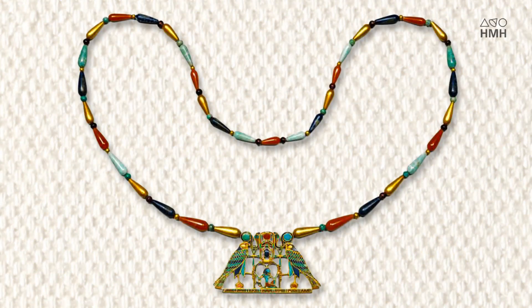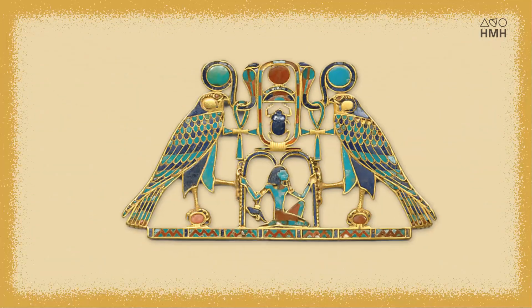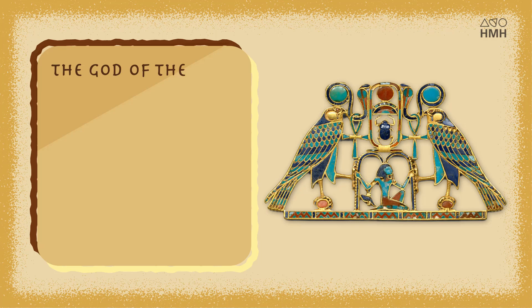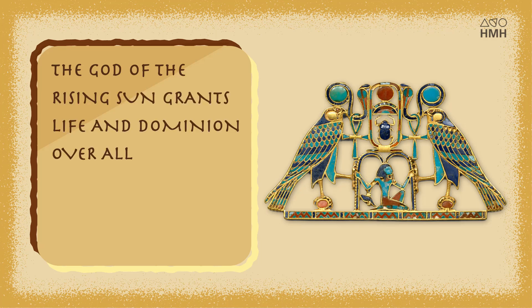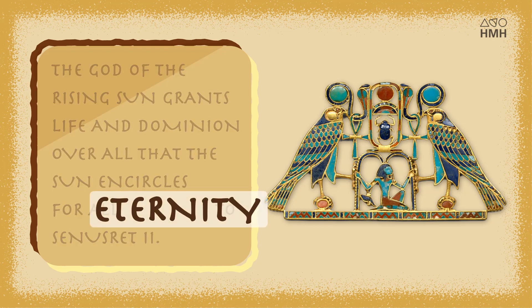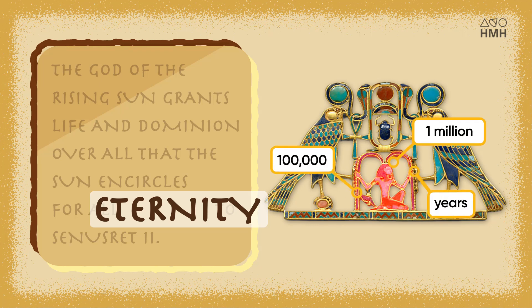One floor below the tile there is an Egyptian necklace that's even older — from around 1800 BC, over a thousand years before Roman numerals even existed. The pendant hanging from the necklace writes out a sentence symbol by symbol in ancient calligraphy. It reads: the god of the rising sun grants life and dominion over all that the sun encircles for all eternity to Senusret the Second. Let's investigate the word eternity — it's written out as 1,100,000 years. Just like how we might say something takes a million years to do, here a very specific number has a less specific meaning.